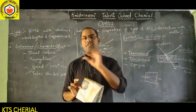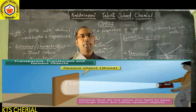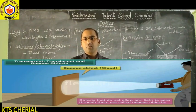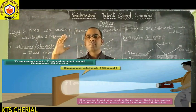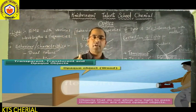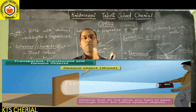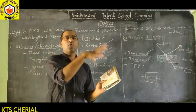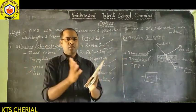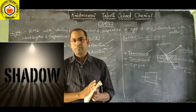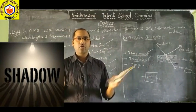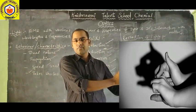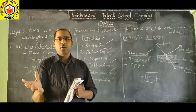Opaque materials cannot pass light through them. The rate of reflection is much higher than the rate of absorption or transmission. When you walk in sunlight, you see your shadow because you are an opaque material — light cannot pass through your body, so a shadow is formed. Opaque materials reflect light.